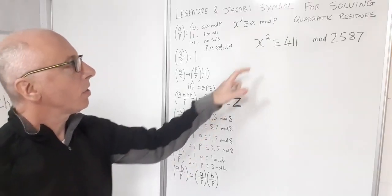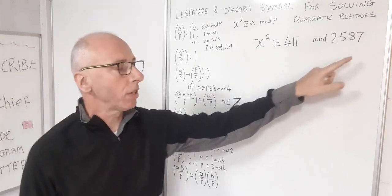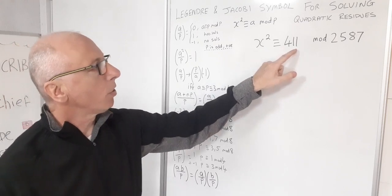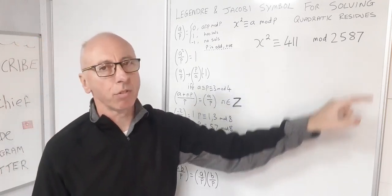Okay, so I've got a question here. Is there a solution to this quadratic residue question? Is there an x that will give us x squared congruent with 411 mod 2587?